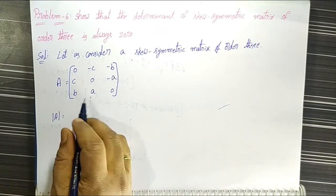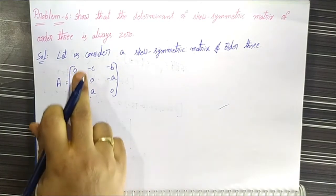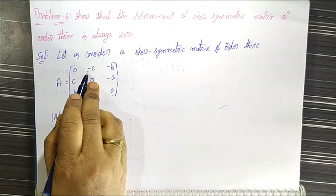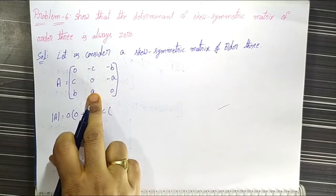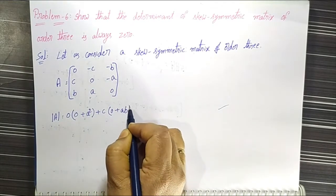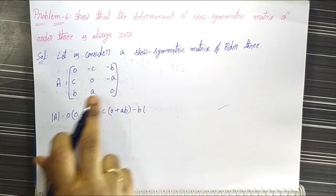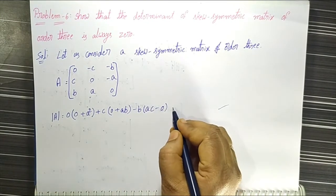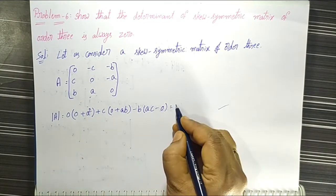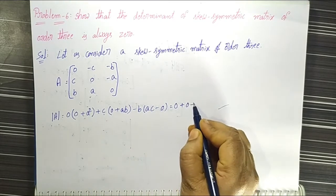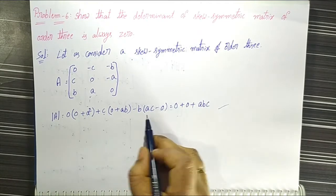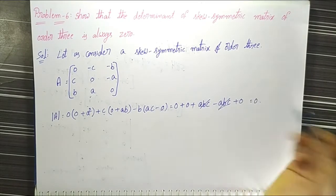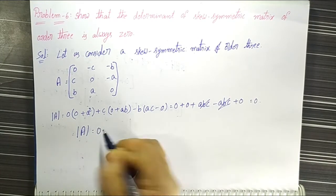det(A) equals: expanding along the first row — 0 into (0·0 - (-a)·a) minus (-c) into (c·0 - (-a)·b) plus (-b) into (c·a - 0·b). This simplifies: -b·(ac - ab·c) plus terms, and ABC minus ABC gets cancelled, giving det(A) equal to zero.